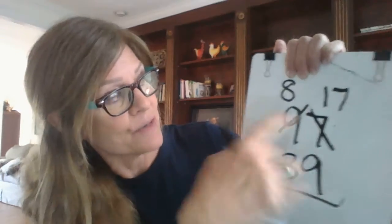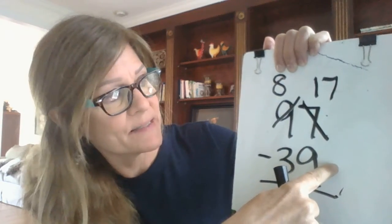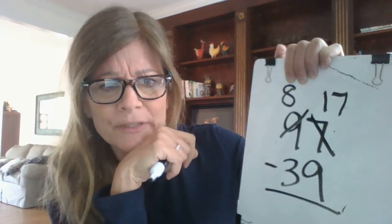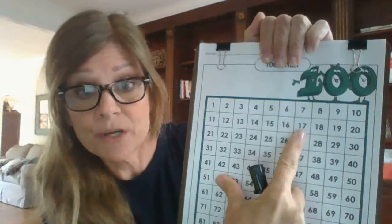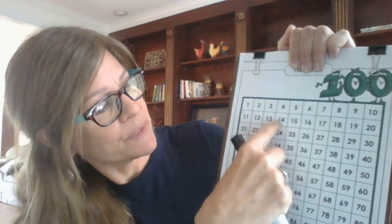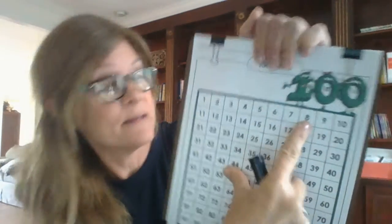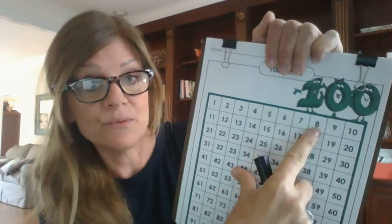Now we've regrouped and we're ready to subtract. This is the easy part. Seventeen minus nine. Ooh, that's a little tricky for me. I'm going to use my hundreds chart on that one. I'm going to start on seventeen, and I'm going to jump backwards nine times. One, two, three, four, five, six, seven, eight, nine. Seventeen minus nine equals eight.